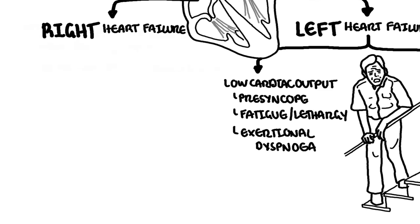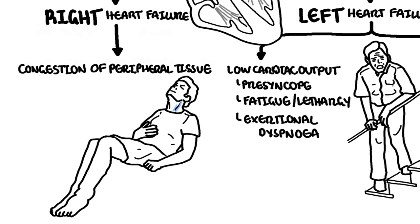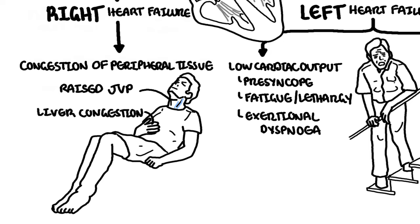Right-sided heart failure leads to congestion of peripheral tissue, which manifests as a raised jugular venous pressure, liver congestion, and pitting lower limb edema.